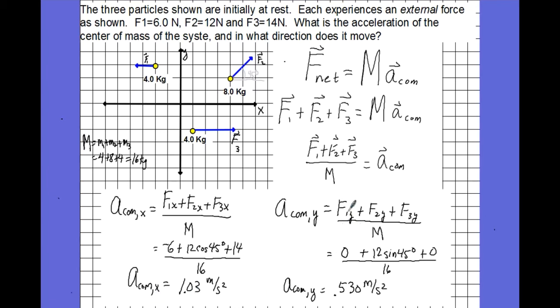Likewise, in the Y direction, F2 is the only force that has a Y component. There it is, 12 sine 45. Divide that by 16 to get my acceleration in the Y direction of positive 0.530 meters per second squared.